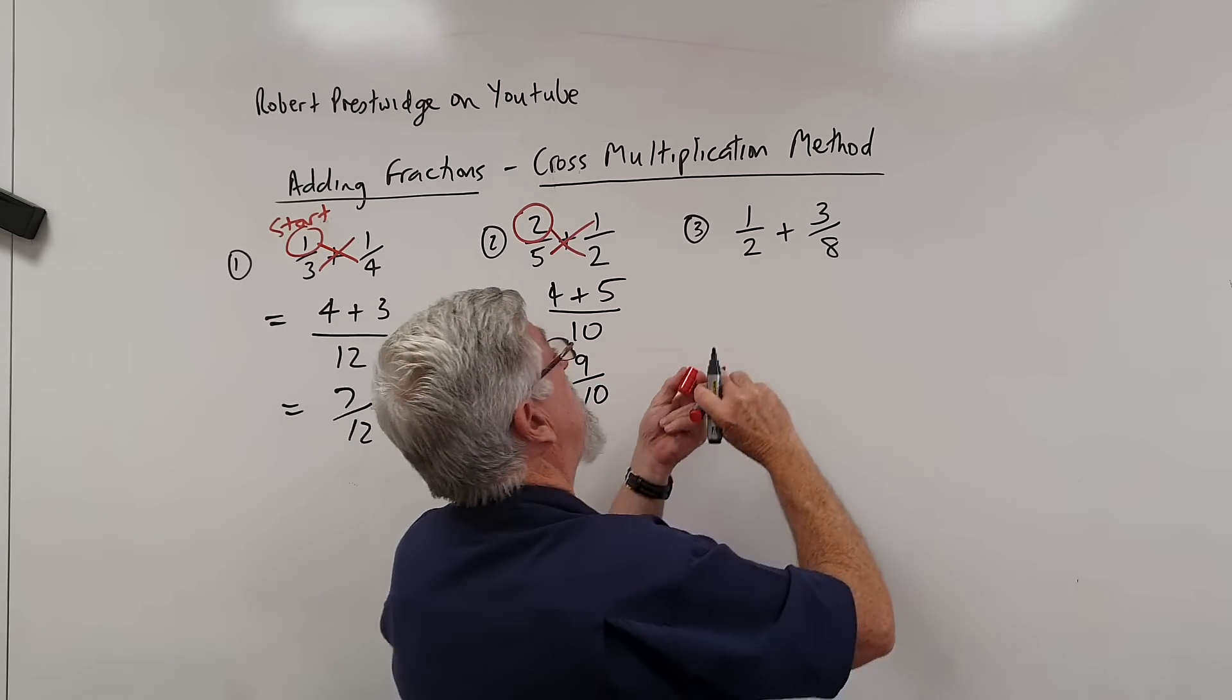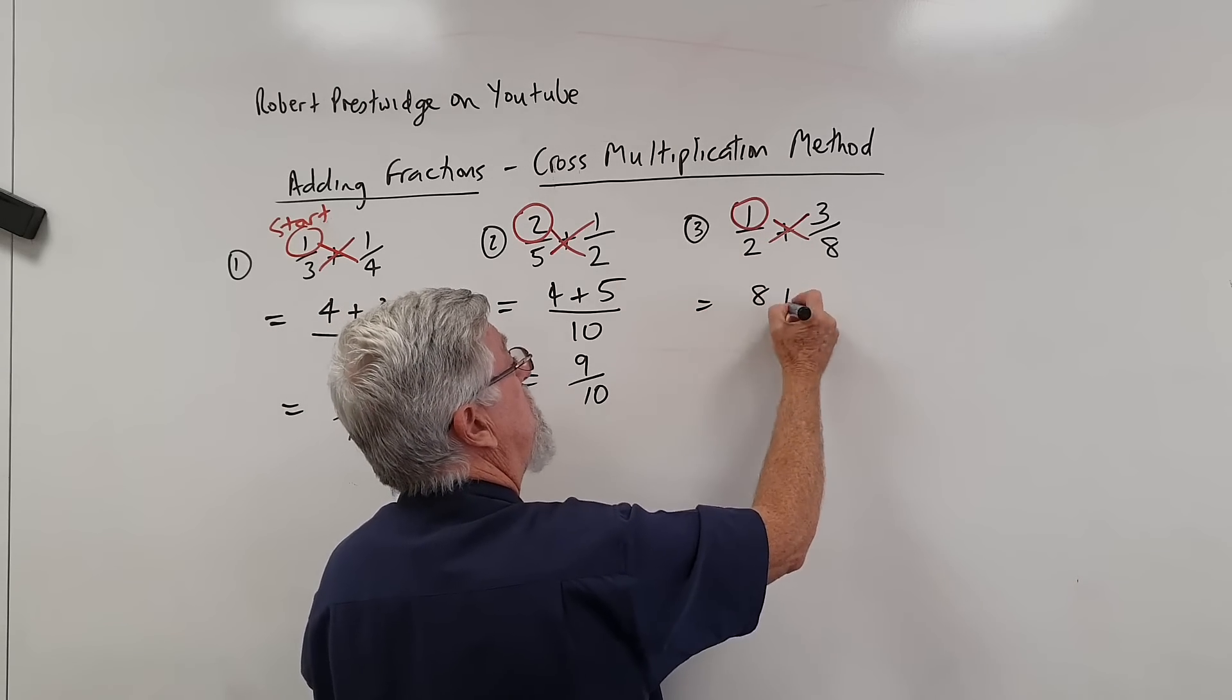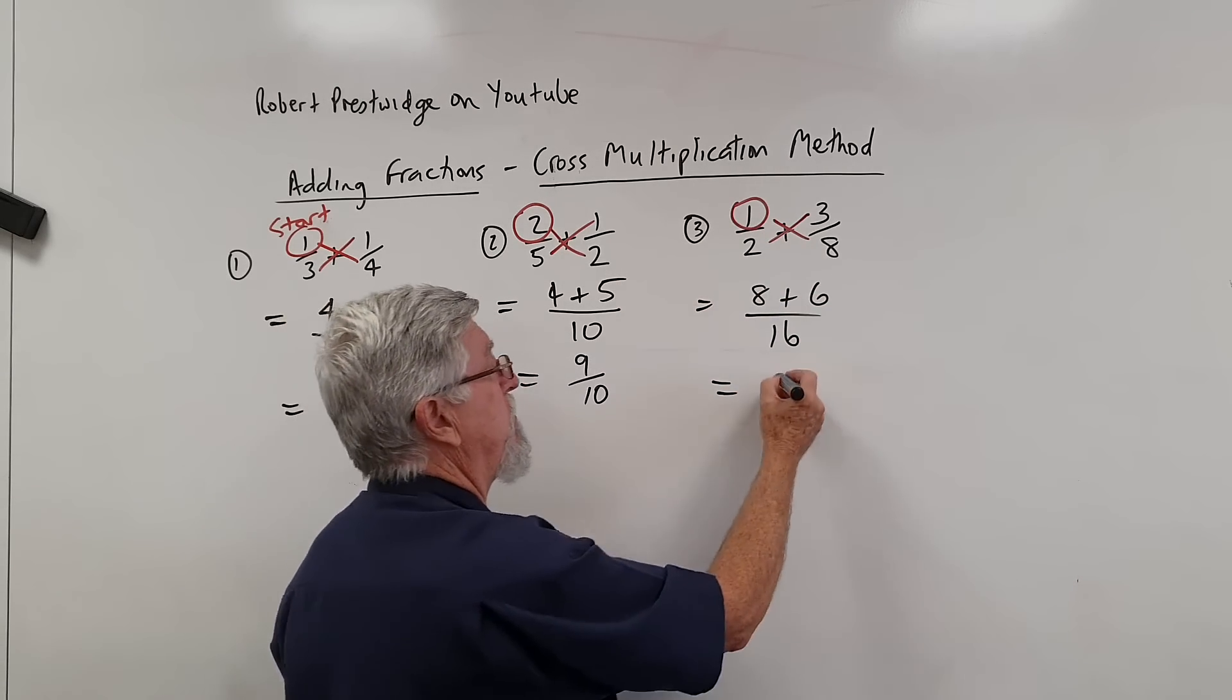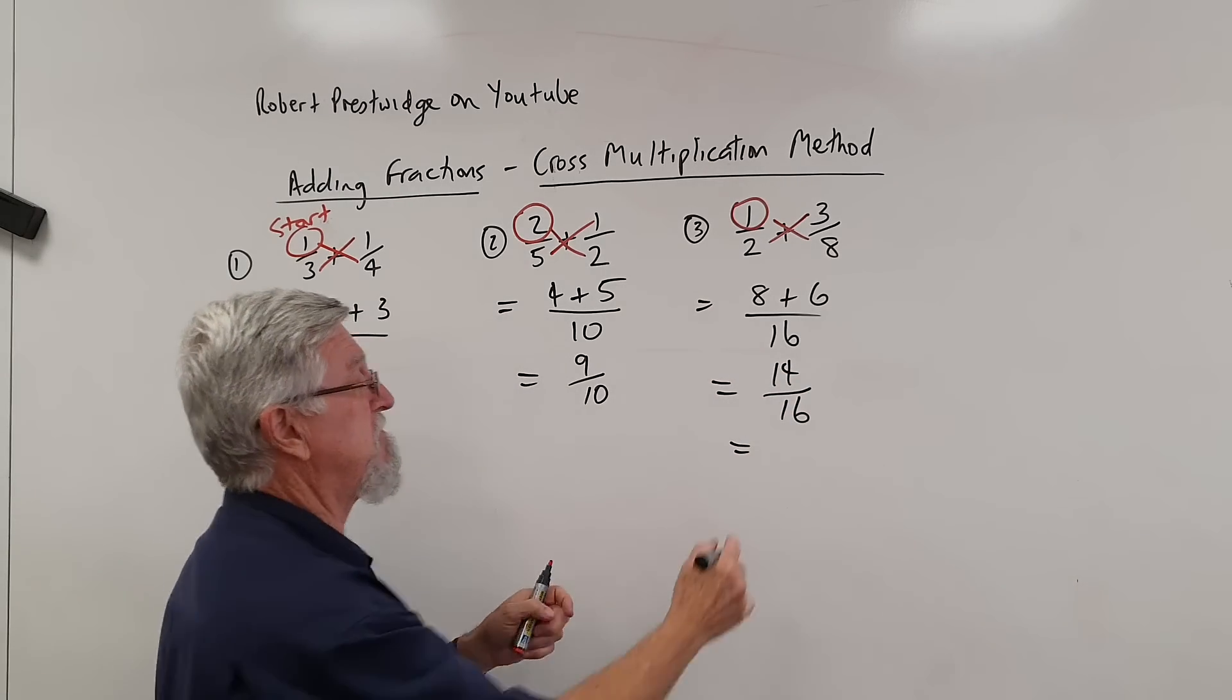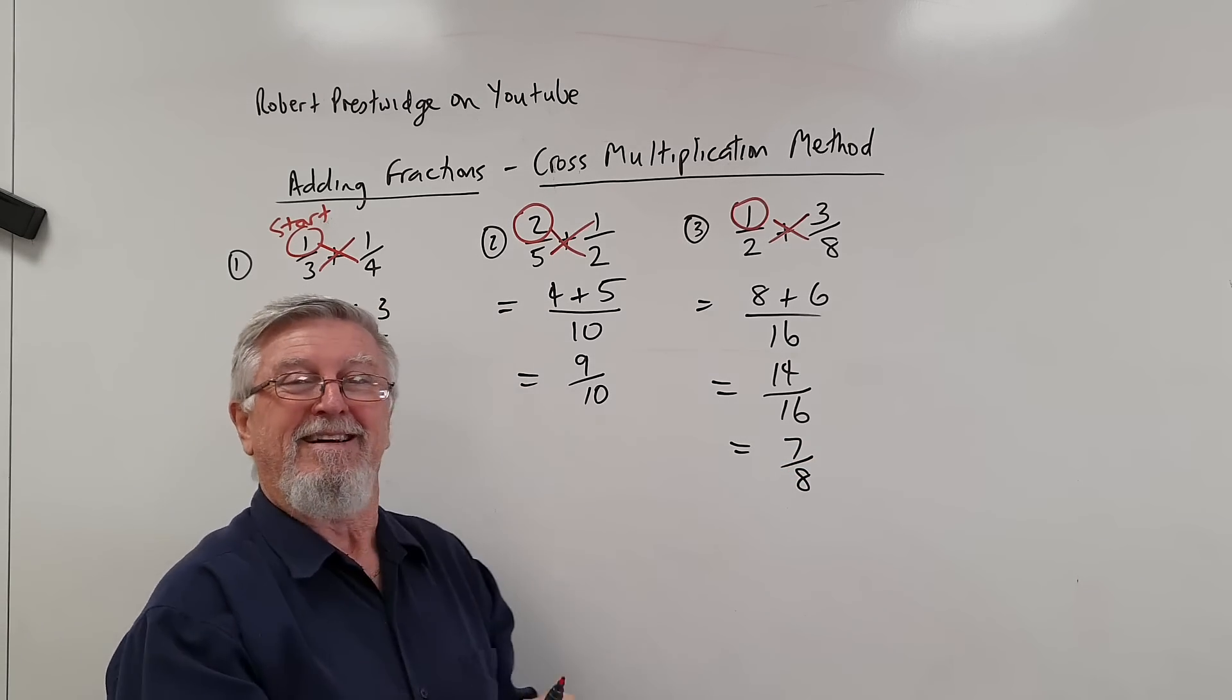And next one, cross multiply, start here, start up there. That's 1 times 8 is 8, 2 times 3 is 6, 2 times 8 is 16 and then you've got 14 over 16. The only thing with that is you've got to be careful, they're both evens, so half the top and half the bottom. Works really well with algebra. Thank you.